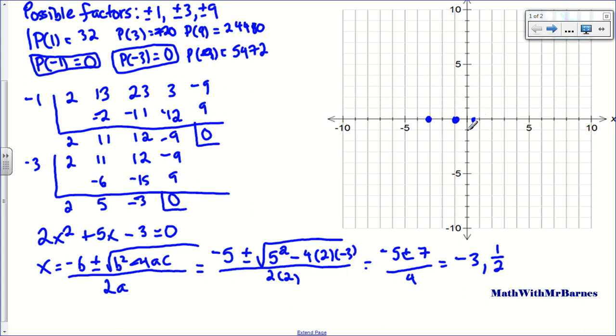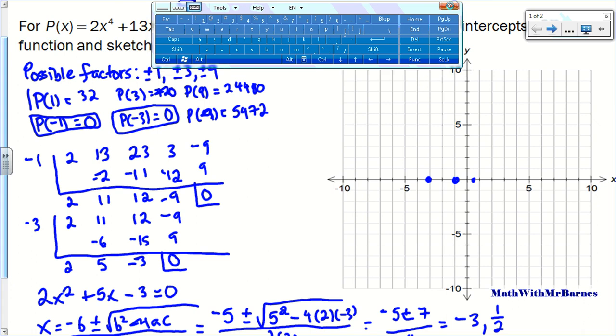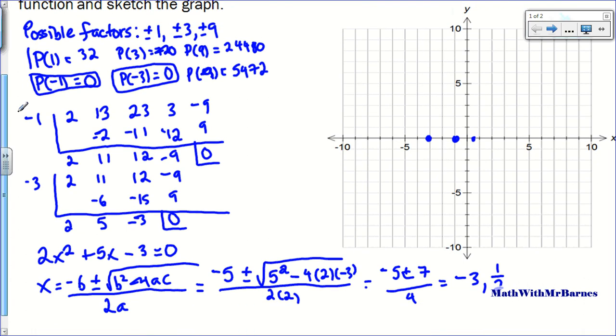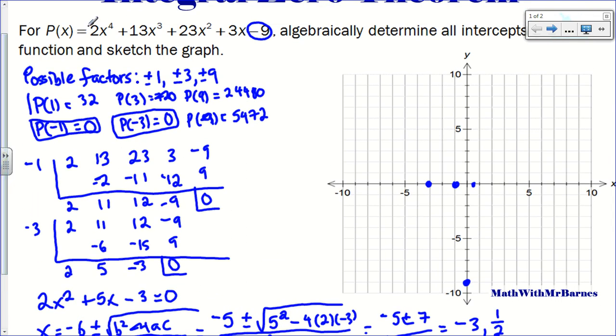We have a couple other things that we can use to get an accurate sketch. I know that my constant, negative 9, is my y-intercept. Because if I let x equal 0, this thing would reduce down to negative 9. I also know, since this has a positive leading coefficient and an even exponent, it's going to open up. It's like a quadratic. Positive leading coefficient with an even exponent opens up. Negative leading coefficient with an even exponent opens down.